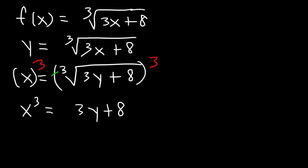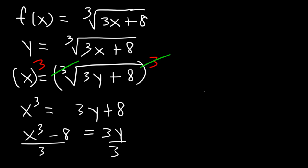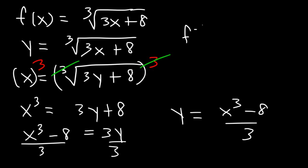The cube root and the cube will cancel. So now we need to subtract both sides by 8, and then divide both sides by 3. So the inverse function is x cubed minus 8 over 3.